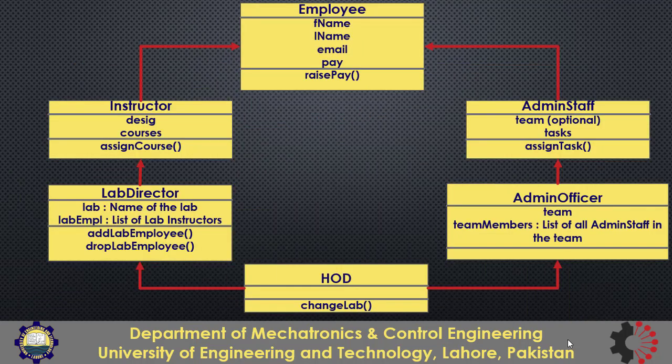Consider the employee class hierarchy from previous lessons: all types of employees like instructor, lab director, admin staff, etc. are child classes of the top-level employee class, and we really don't want to create an instance of that top parent class directly. So it will be better to convert the employee class to an abstract class, which will prevent creating any instance of the employee class directly.